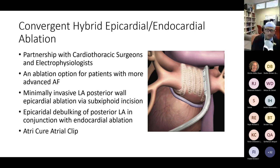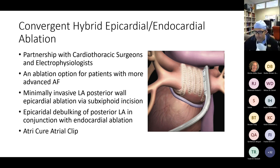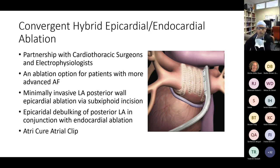The convergent hybrid epicardial-endocardial ablation is a partnership between cardiothoracic surgeons and electrophysiologists, reserved for patients with more advanced AF. It involves a minimally invasive left atrium posterior wall epicardial ablation via a sub-xiphoid incision to debulk the posterior wall. Our surgeons — Dr. Barksdale, Dr. Prigshak, and Dr. Girdish — also place an AtriClip to clip the left atrial appendage at that time, which helps reduce stroke risk. Then six weeks later, we come in and perform the endocardial ablation — so it's a hybrid where we ablate both the outside and the inside of the heart, reserved for more advanced AF patients.